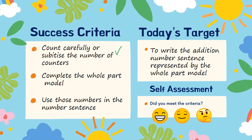Today's target, Rainbow, is to write the addition number sentences represented by the whole part model. We're going to look at some whole part models and put the numbers from the whole part model into an addition number sentence. To do that, you're going to need to count carefully or subitise the number of counters and complete the whole part model, and then use those numbers to make your addition number sentence.